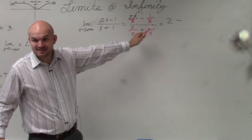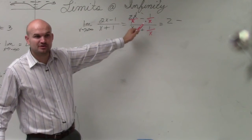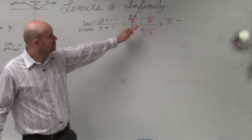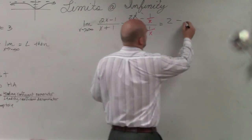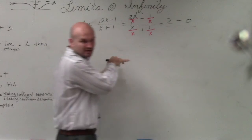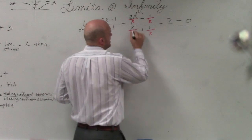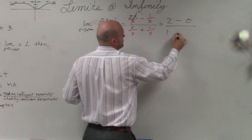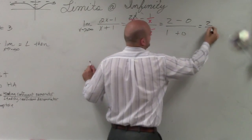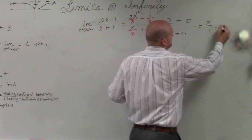1 over x, well, as this keeps on getting larger and larger, this is going to approach 0. That was that rule that I erased that was right up there, right? 1 over x over x is going to equal 1 plus 0. So therefore, you get 2 over 1, which equals 2.